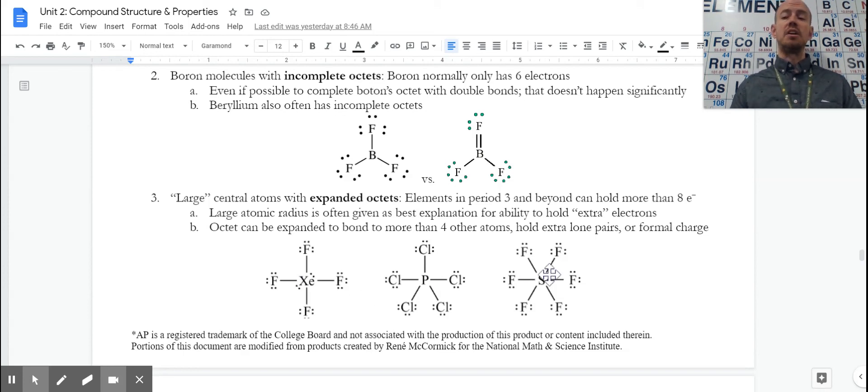So very often in our expanded sets here, we would be looking at something bonded to halogens or something bonded to oxygen, but what's most important is that this can't always happen. It only happens with our largest atoms, so row three, silicon, phosphorus, sulfur, and chlorine, and larger.